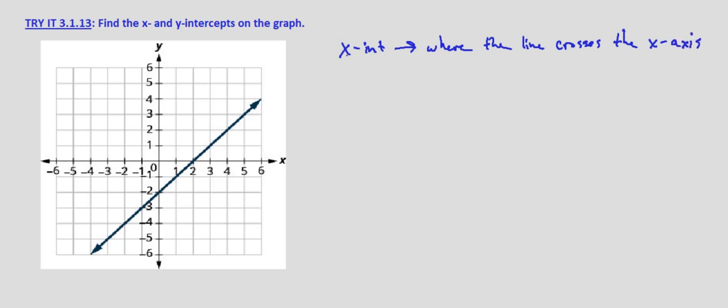So if we look at our graph, where does this line cross the x-axis? It crosses at this point right here. When x equals 2, y equals 0. So the x-intercept is the point 2, 0.